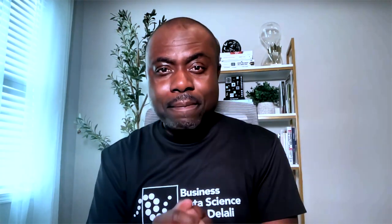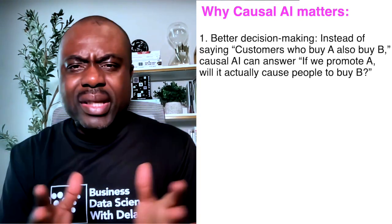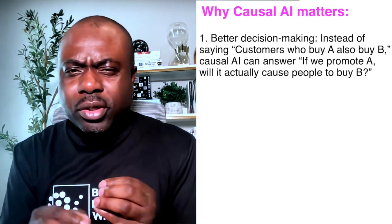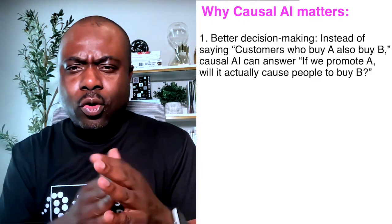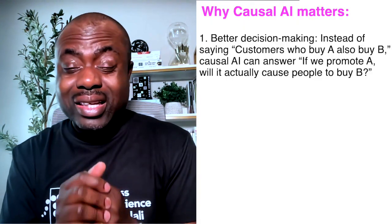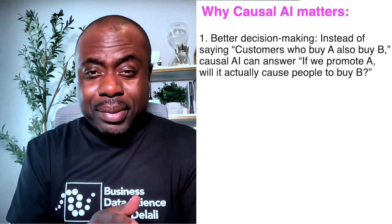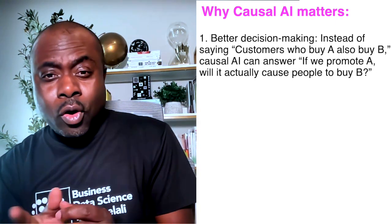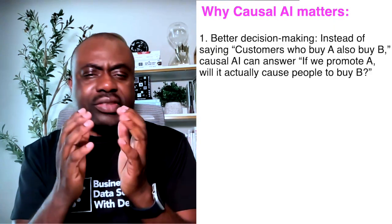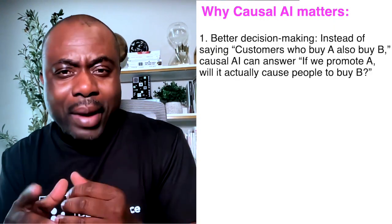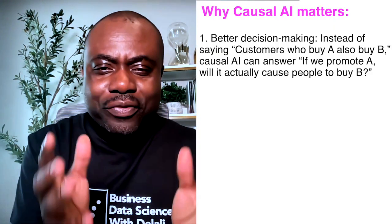Causal AI matters a lot for many different reasons. Here are three major ones. Number one: better decision making. It's not possible to make better decisions if we only understand correlations without understanding what caused A to happen or what caused B to happen, or if A changes, what happens to B.